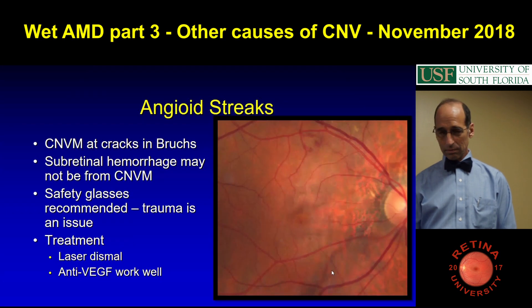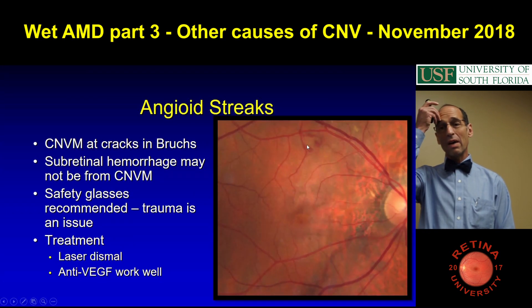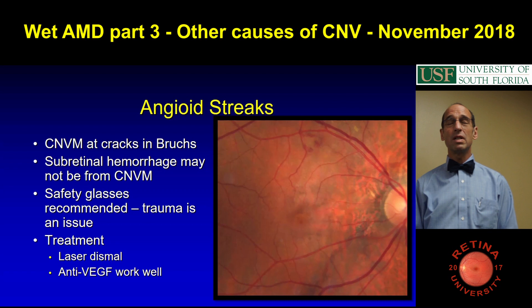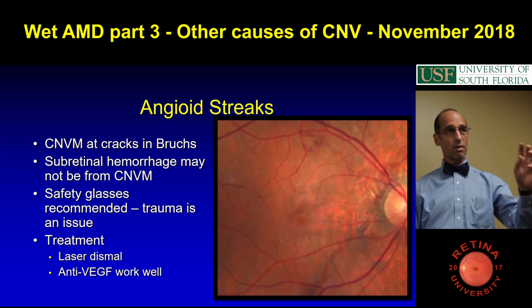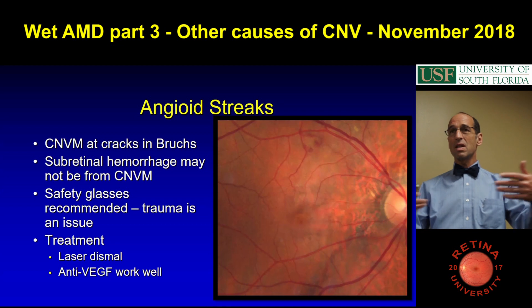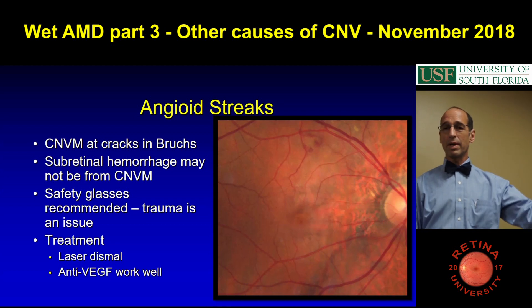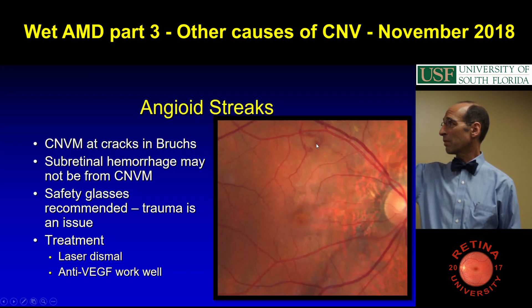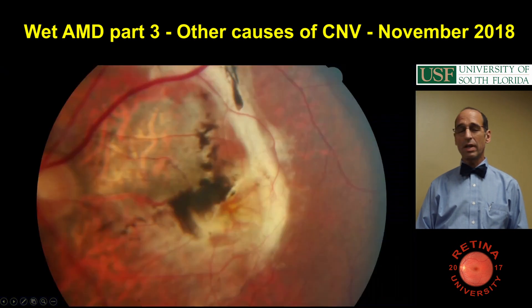Angioid streaks — they get cracks in Bruch's membrane, you get a subretinal hemorrhage, sometimes not from CNV. You're supposed to recommend safety glasses, because trauma's an issue. Laser used to be dismal with angioid streaks, because what you do when you laser them is you break through Bruch's, and it would just be like this never-ending scar — every time you treat them, it got bigger and bigger. So the anti-VEGFs have been great. This picture has just a little membrane up top, which is interesting. I don't think I treated that one.